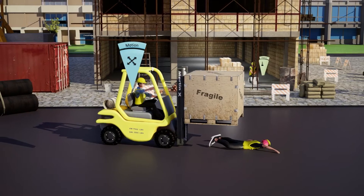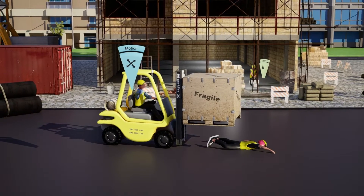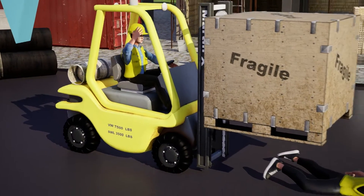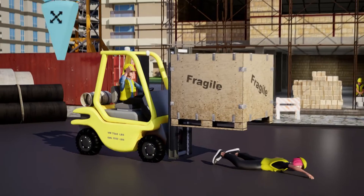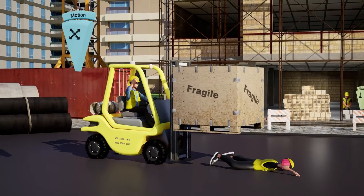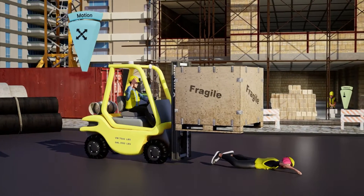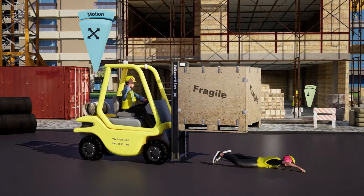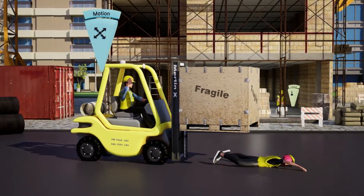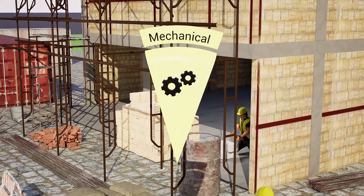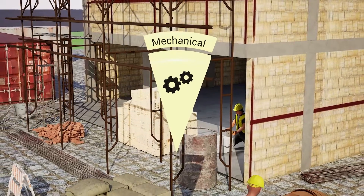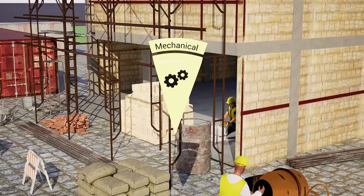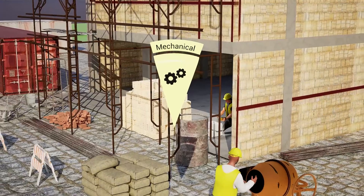Moving forward to motion — a form of energy apparent in the movement of equipment, tools, and materials within the construction landscape. Uncontrolled vehicles or unsecured loads can pose significant risks, such as accidents from being struck by moving objects or getting caught between moving equipment.